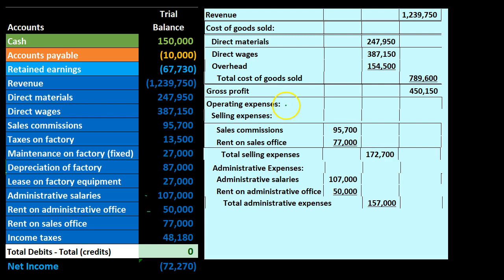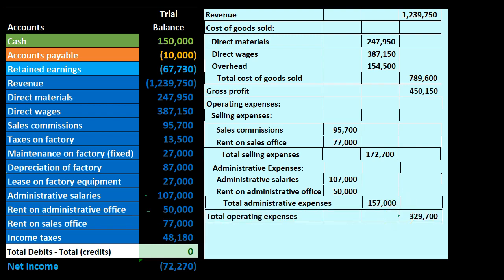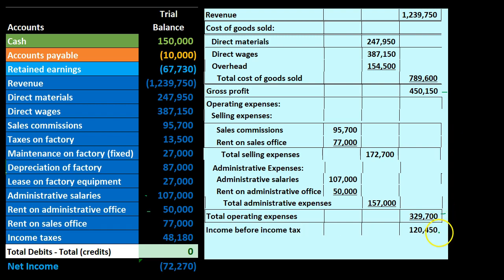Both selling and administrative are operating expenses. Adding 172,700 plus 157,000 gives total operating expenses of 329,700. Back in the outer column, gross profit minus total operating expenses of 329,700 gives income before income taxes of 120,450. We then calculate taxes on that to arrive at the bottom-line net income of 72,740.